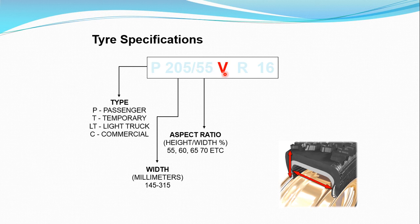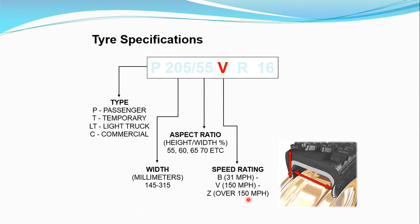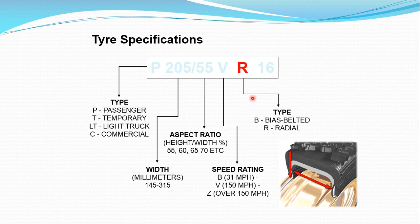Next, V represents the speed rating. Z represents speeds more than 150 miles per hour; V is for moderate speed; B is for slow speed vehicles. R represents the type of tire — radial, bias, or belted. B represents bias belted; D represents the general bias tire (ply-based); and R is for the belted radial type.